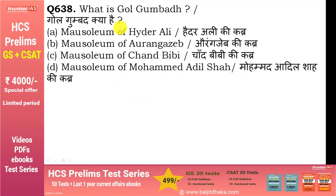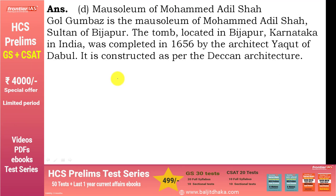What is Gol Gumbaz? Gol Gumbaz Muhammad Adil Shah का मकबरा है। यह Bijapur, Karnataka में है और 1656 में complete हुआ था। इसके architect थे Yaqut। यह Deccan architecture का example है।